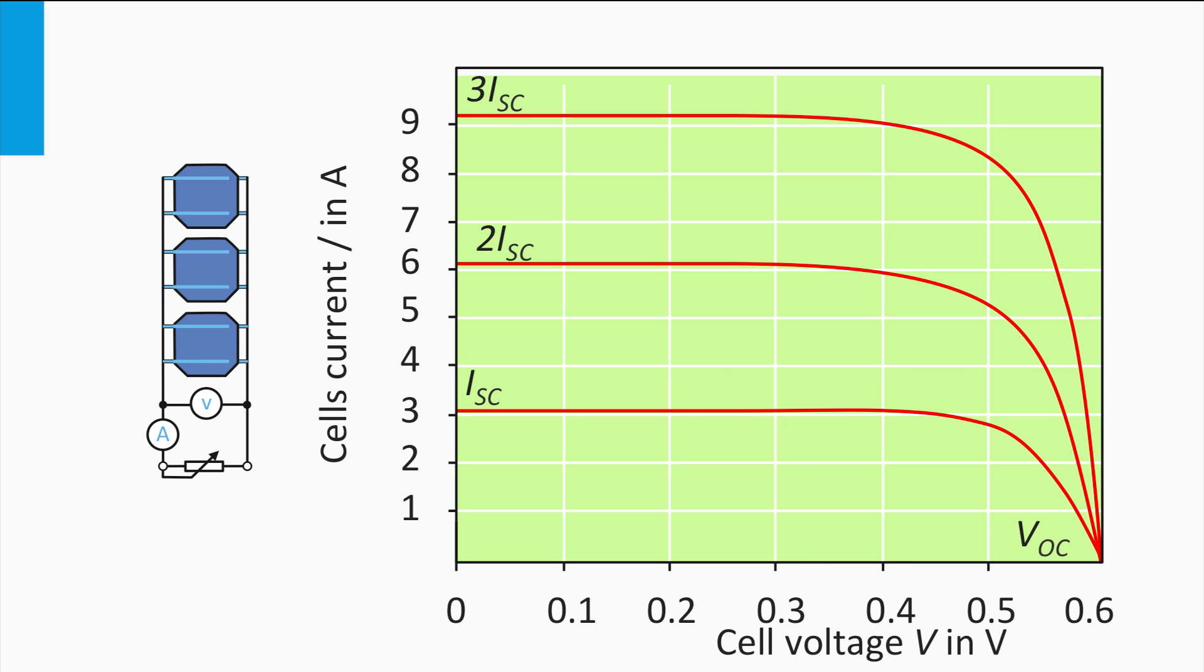A second way of connecting the solar cell is in parallel. Here you see three solar cells connected in parallel. The IV curve shown is that of a single solar cell. Parallel connection means that the voltage is the same over all solar cells. However, the currents of the solar cells add up.